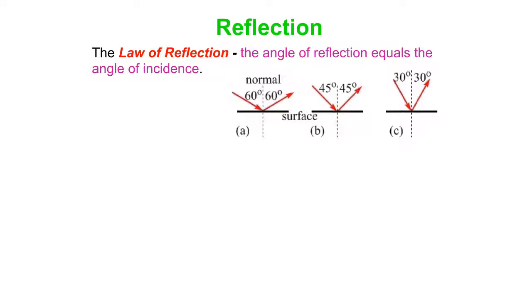Light does exactly the same thing. So it's a very simple idea, the law of reflection. The angle of reflection equals the angle of incidence.